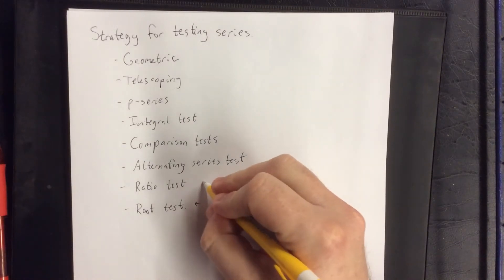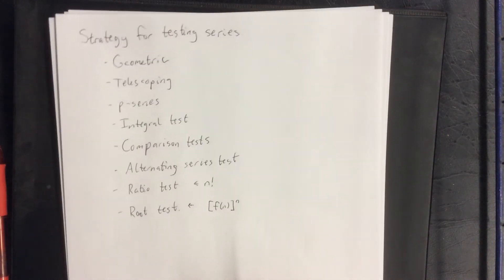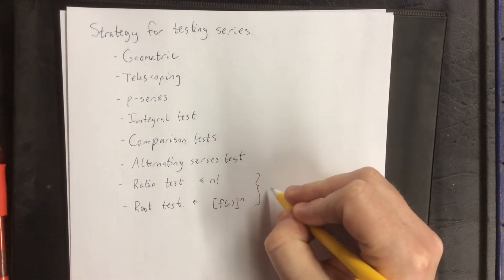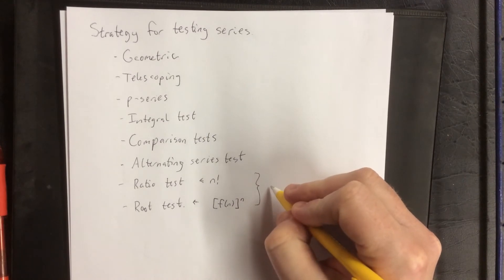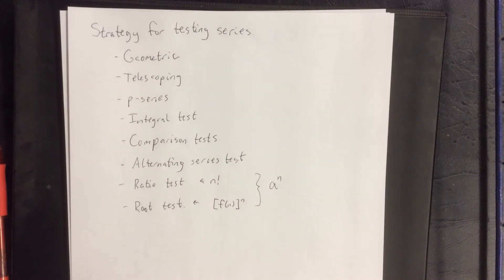Anytime you see a factorial involved, go immediately to the ratio test. In both of these cases, if you have just a number raised to a power, a number raised to the nth power, that's probably going to be a good one to use.